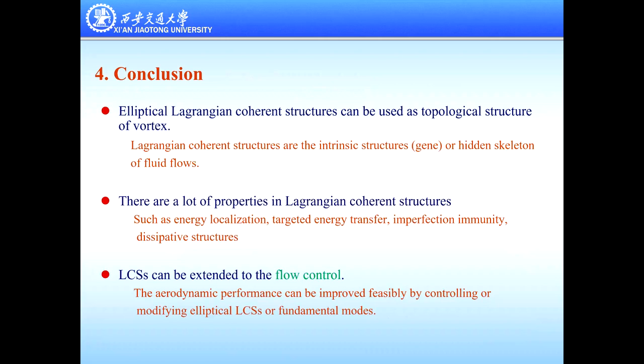Let's give the conclusions. Elliptic Lagrangian coherent structures can be used as the topological structure of the vortex. Lagrangian coherent structures are the intrinsic structures or hidden skeleton of the flow fields — if we understand these structures, we understand the flow. There are many properties in the Lagrangian coherent structures such as energy location, targeted wave energy, imperfection immunity, and dissipative structures. LCS can not only be used in detecting vortices and describing the flow field, but also in flow control technology. Similarly, aerodynamic performance can be feasibly improved by controlling, modeling, or modifying elliptic LCS as fundamental modes.